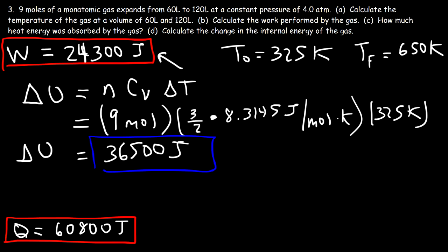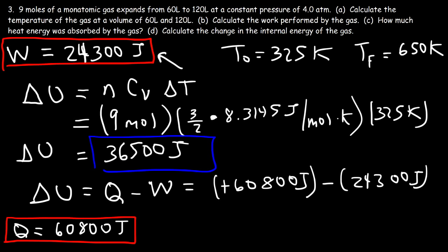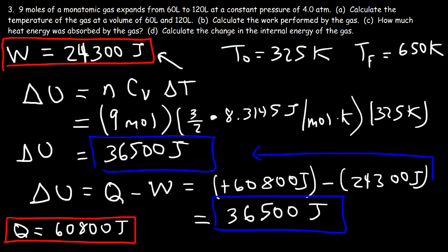Alternatively, using ΔU = Q − W: Q is 60,800 joules and W is 24,300 joules, so 60,800 − 24,300 = 36,500 joules — the same answer. There are multiple ways to get the same result.